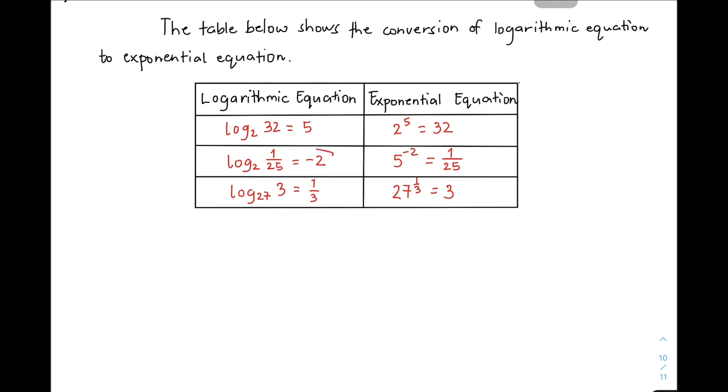And then we have here the logarithm of 1 over 25 base of 5 is equal to negative 2, and its counterpart in exponential equation is 5 raised to negative 2 is equal to 1 over 25.